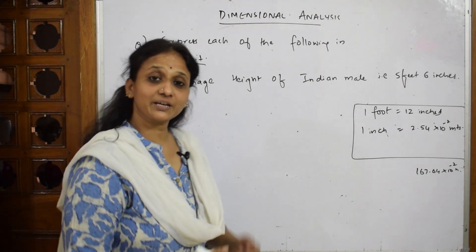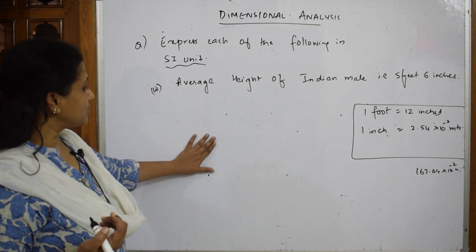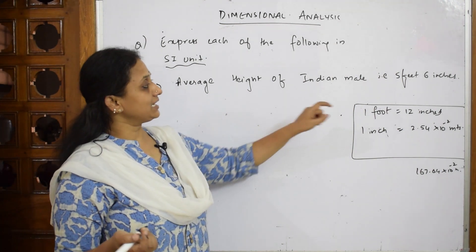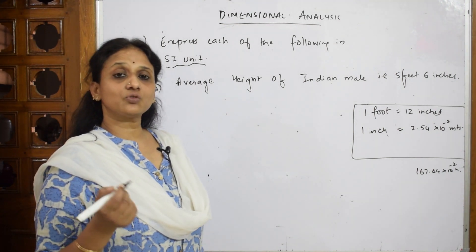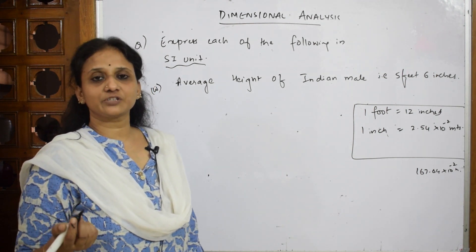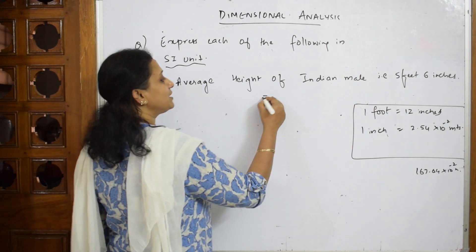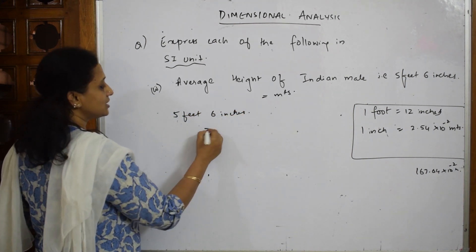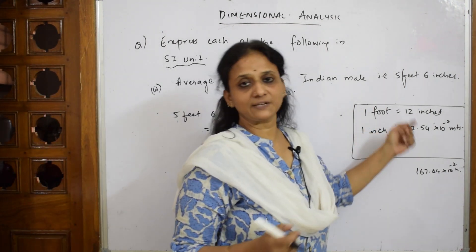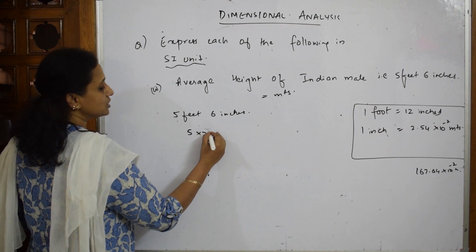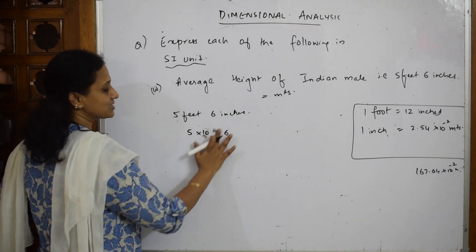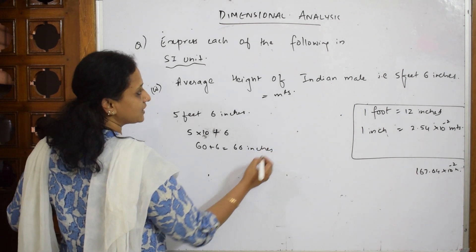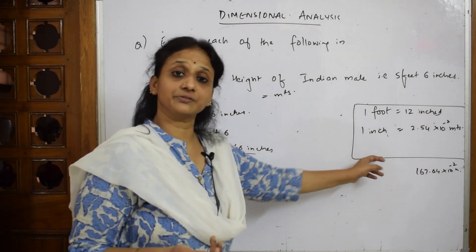Next question: express in SI unit - the average height of an Indian male is 5 feet 6 inches. The SI unit for height is meters. First convert 5 feet 6 inches: 1 foot = 12 inches, so 5 feet = 60 inches. 60 + 6 = 66 inches. So 5 feet 6 inches = 66 inches.